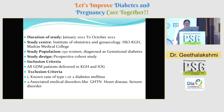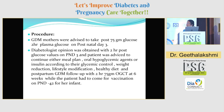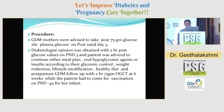Inclusion criteria: all GDM patients delivered at KGH and IOG. Exclusion criteria: known type 1 or type 2 diabetes mellitus, and associated medical disorders like gestational hypertension, heart disease, and seizure disorder. GDM mothers were advised to take 75 grams of glucose and the 2-hour plasma glucose was assessed on postnatal day 3. Diabetologist opinion was obtained, and patients were advised to continue either a meal plan, oral hypoglycemic agents, or insulin based on glycemic control, weight reduction, lifestyle modification, and healthy diet. Postpartum follow-up included 75 grams OGCT at 6 weeks when the patient came for vaccination on postnatal day 42 with her infant.